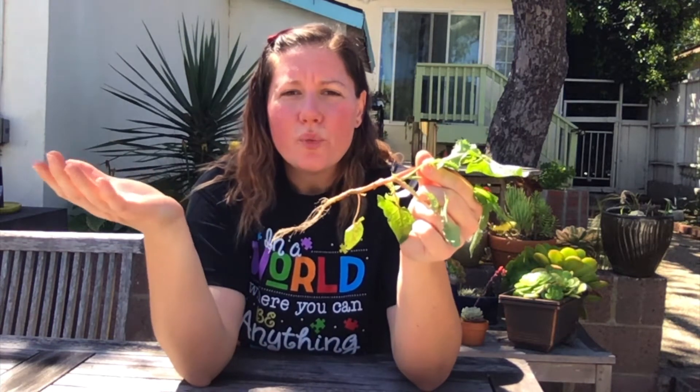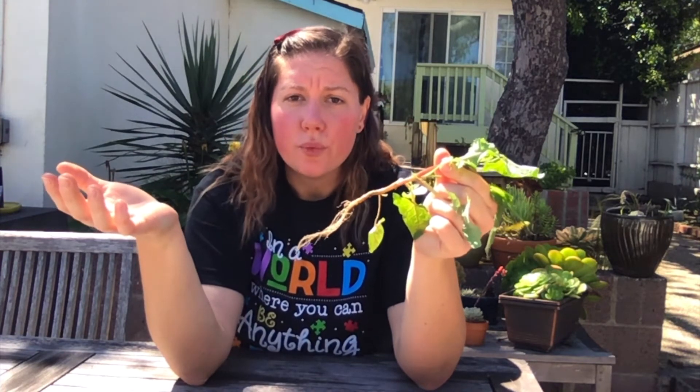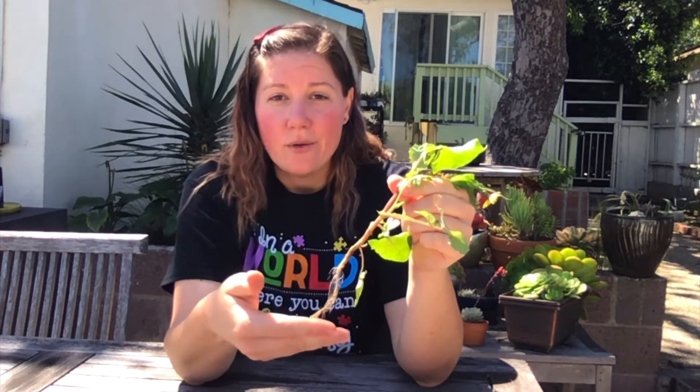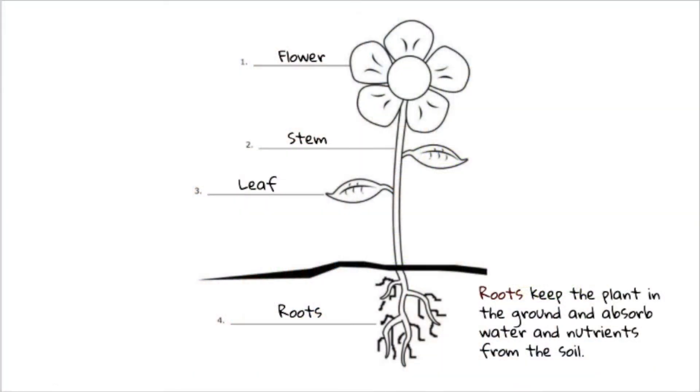Now we're going to look at what each part of the plant does. Let's start down at the bottom — the roots. Where are the roots usually when you look at a plant? You can't really see them because they're actually underground. Roots keep the plant in the ground even in heavy winds and absorb water and nutrients from deep underground in the soil.